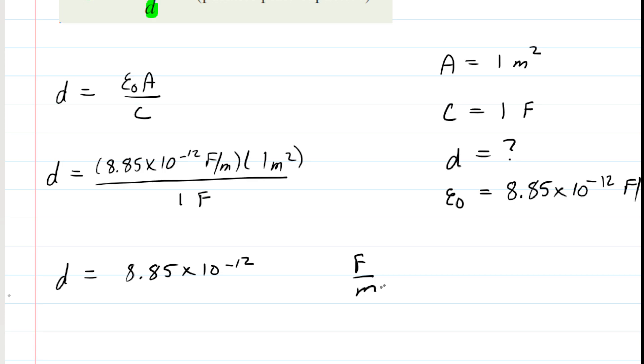Dimensionally, we have a farad per meter multiplied by a meter squared, and then that is all over a farad. What happens in the numerator is that the meter will cancel with another meter, and then the farads will cancel out as well, leaving us with meters. So the plate separation would be a very tiny number of meters.